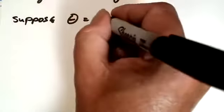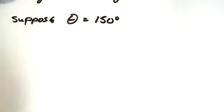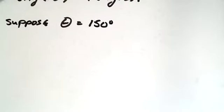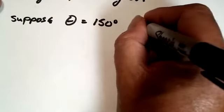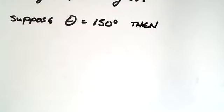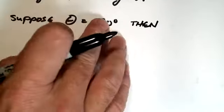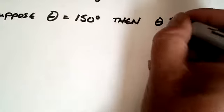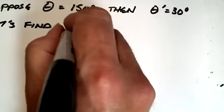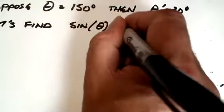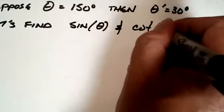So let's take, for example, suppose Theta equals, let's make it 150 degrees, okay? So 150 degrees, then what can we say about the reference angle? So notice that's going to be quadrant two, and if you look back at the rule, it says you're supposed to subtract this number from 180 degrees, so we've got Theta prime is equal to 30 degrees. So if you say, let's find, I don't know, say sine of Theta and cotangent of Theta, okay?